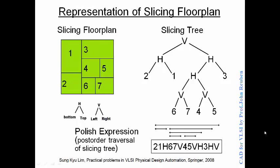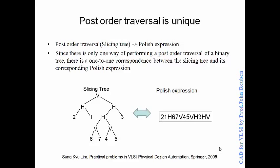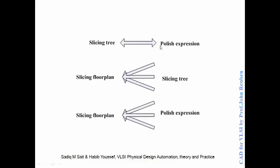Why are we doing this? There is something unique about this. The post-order traversal of a tree is unique — you can verify that from the basics of algorithms. So when we do a post-order traversal of a slicing tree, we get a polish expression. Because there is only one way of performing a post-order traversal of a binary tree, there can be only one polish expression corresponding to a slicing tree. That is very important to understand.